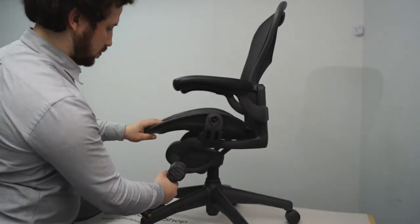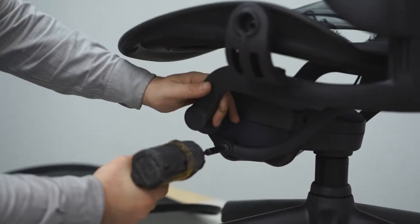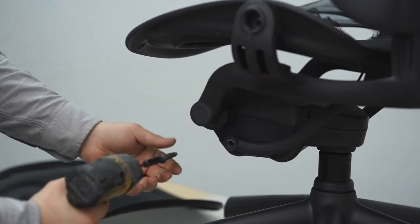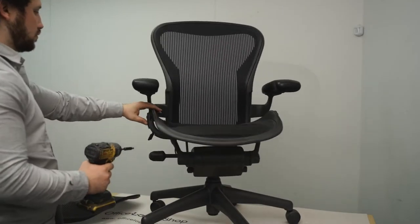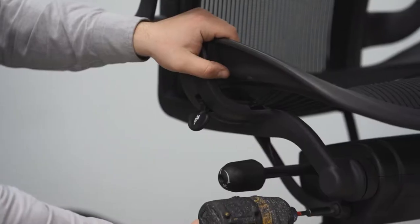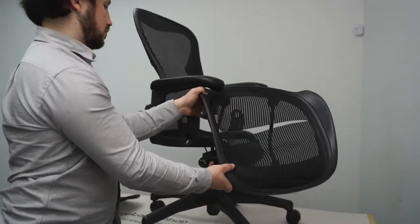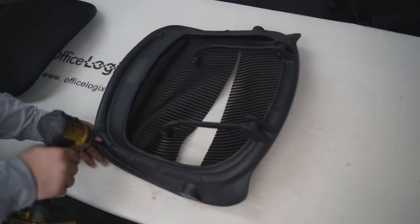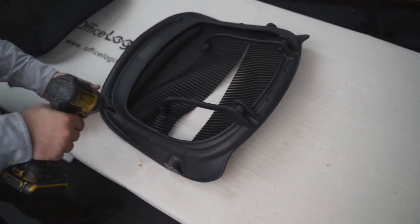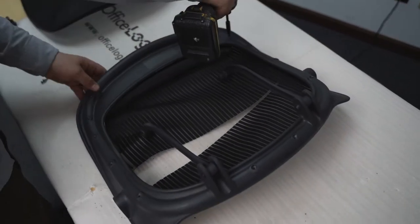Screws can be removed with a hexagon head on a screwdriver or power drill. Flip the seat over and remove the outlining screws as demonstrated. This will separate the seat frame and seat mesh.